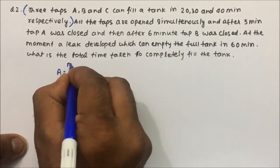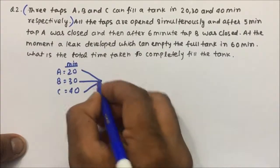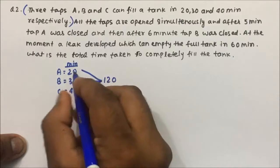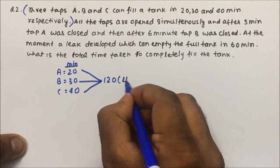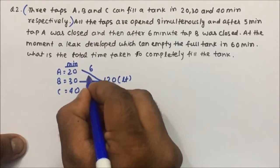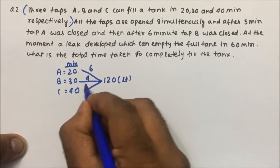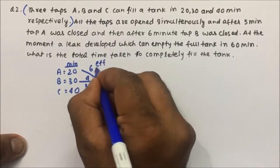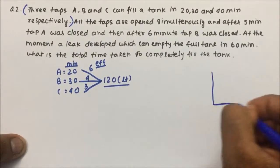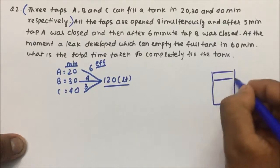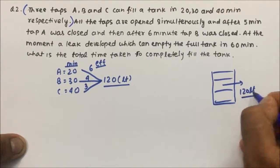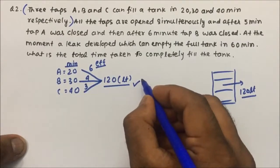After writing it down, we take the LCM of 20, 30, and 40, which is 120. So 120 divided by 20 is 6, 120 divided by 30 is 4, and 120 divided by 40 is 3. These become our efficiencies, and the LCM becomes our capacity. So the capacity of the tank is 120 liters.